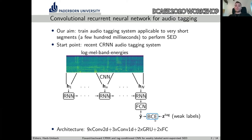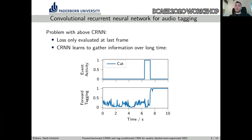However, there's a drawback with this training scheme. Due to the fact that we only evaluate the loss at the last frame, the model learns that it can gather information over a long time, because it only has to provide an accurate prediction at the last frame. This is illustrated here — we have an event 'cat' between second six and eight, and we see that the model actually processes nearly the whole event before making a positive prediction.